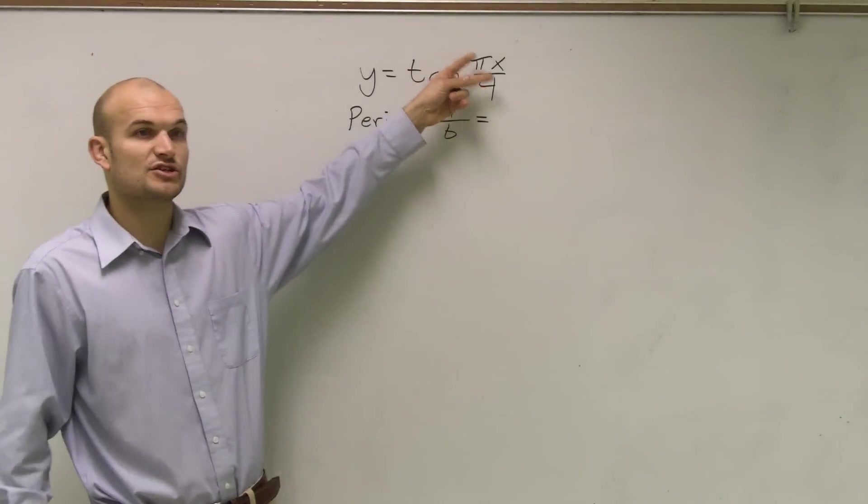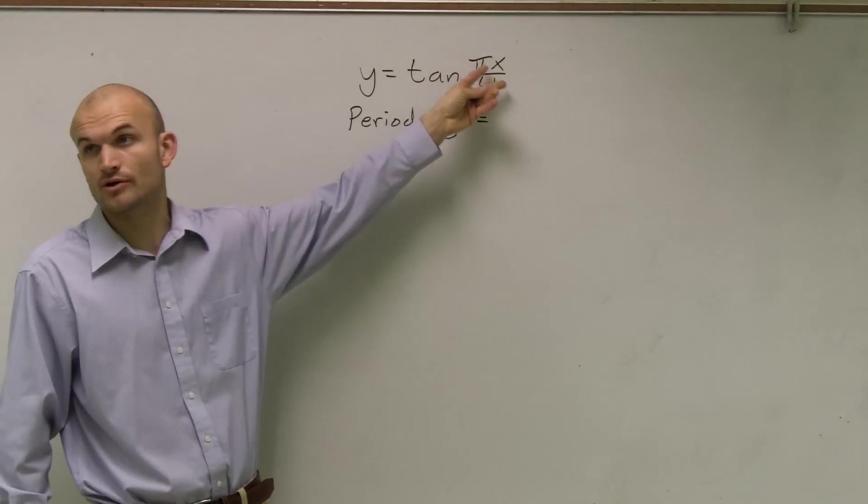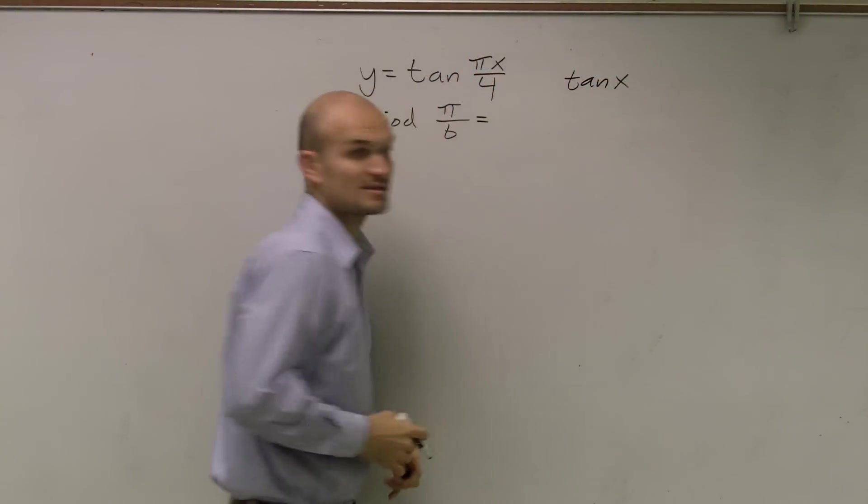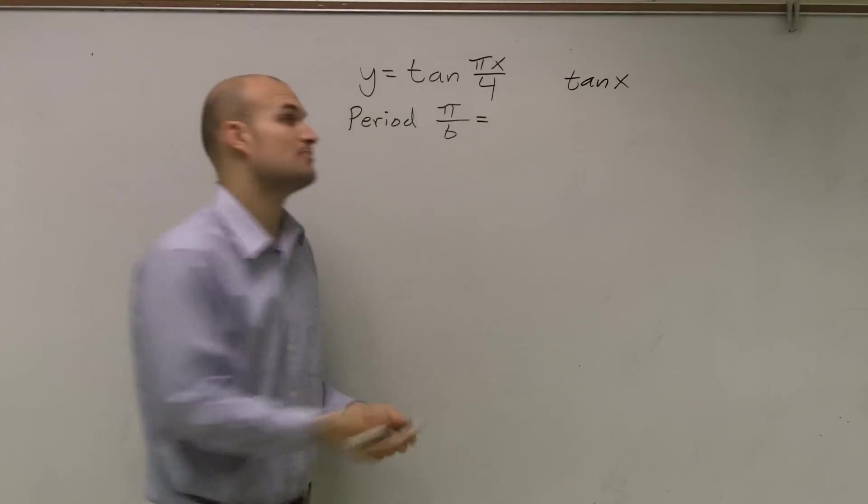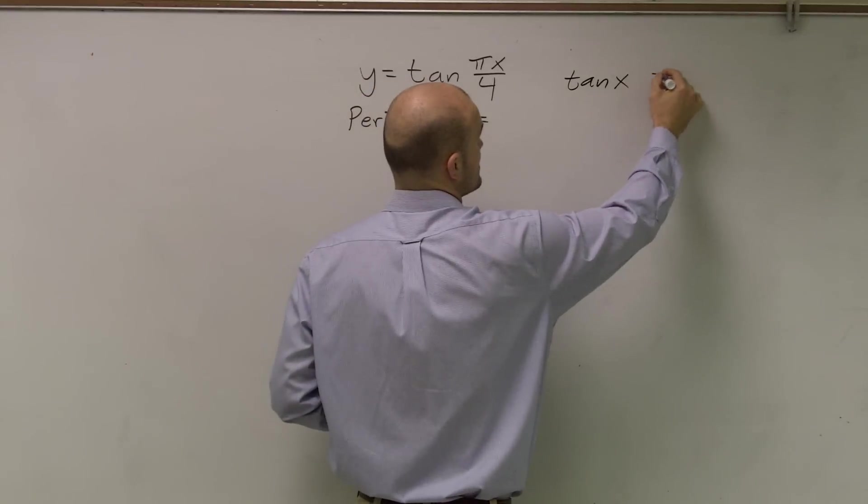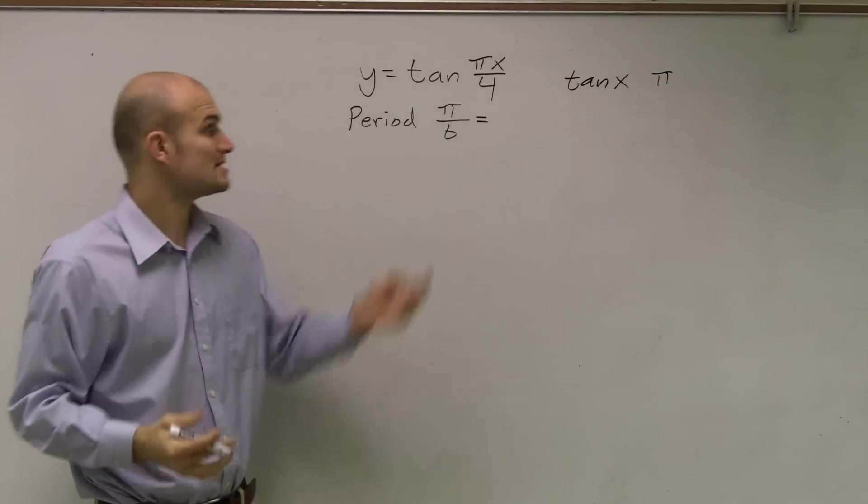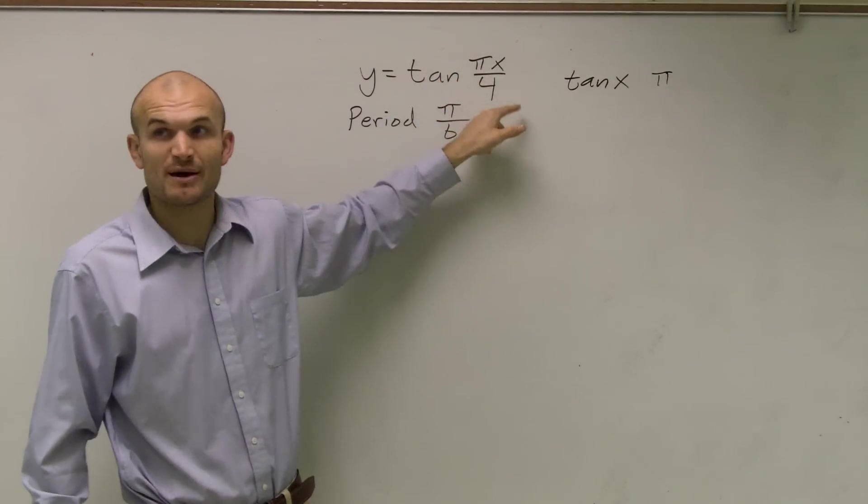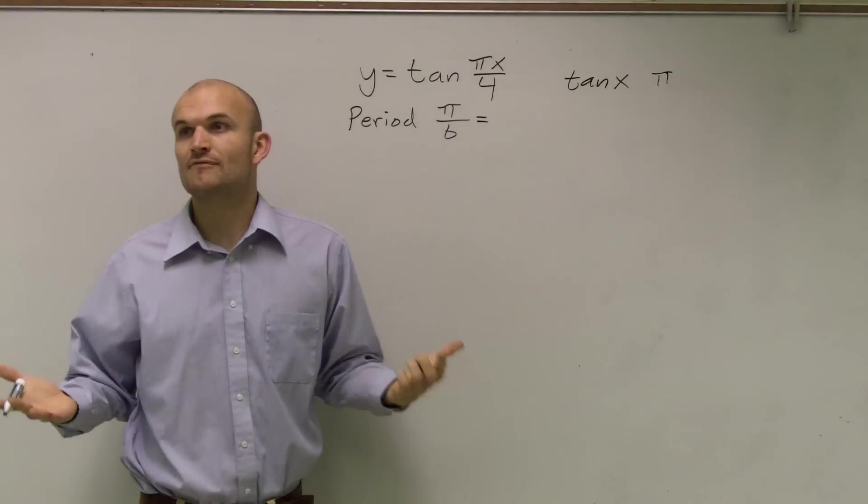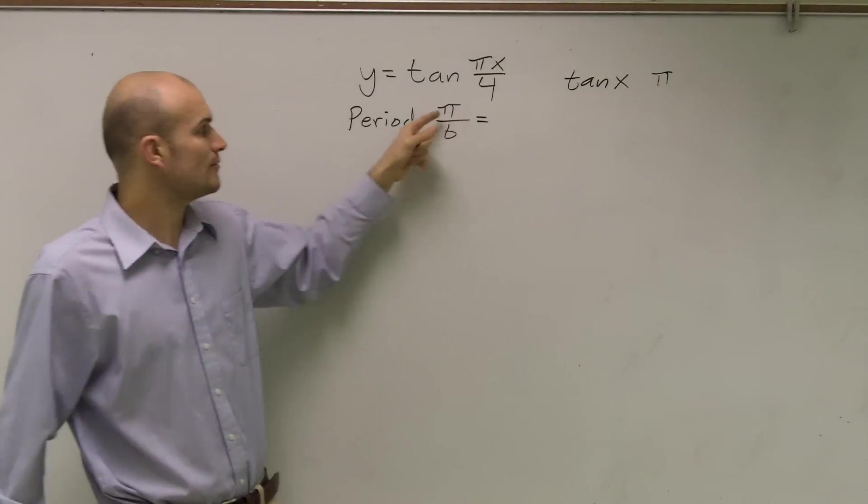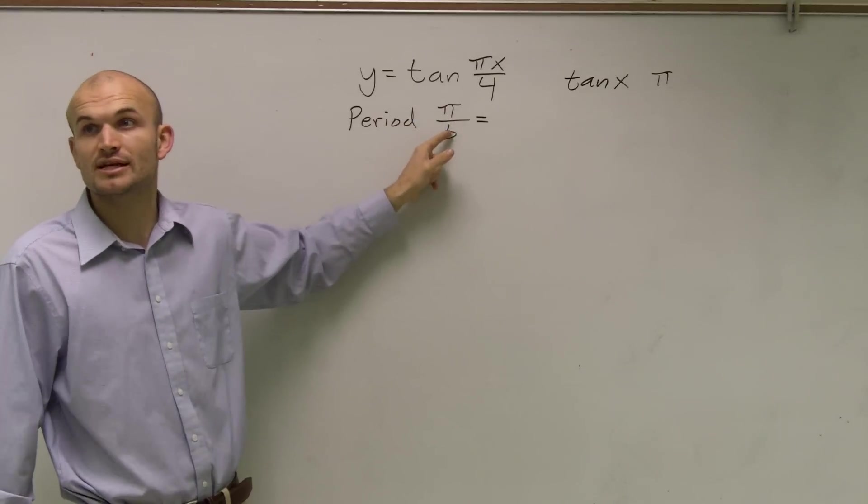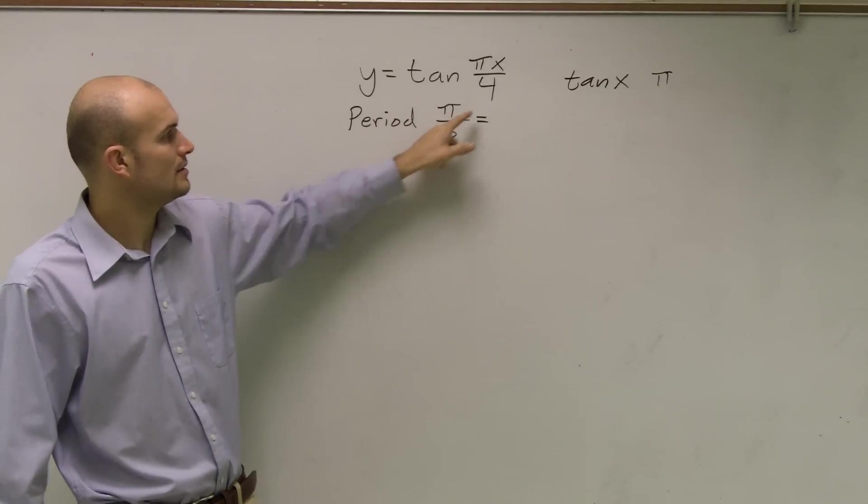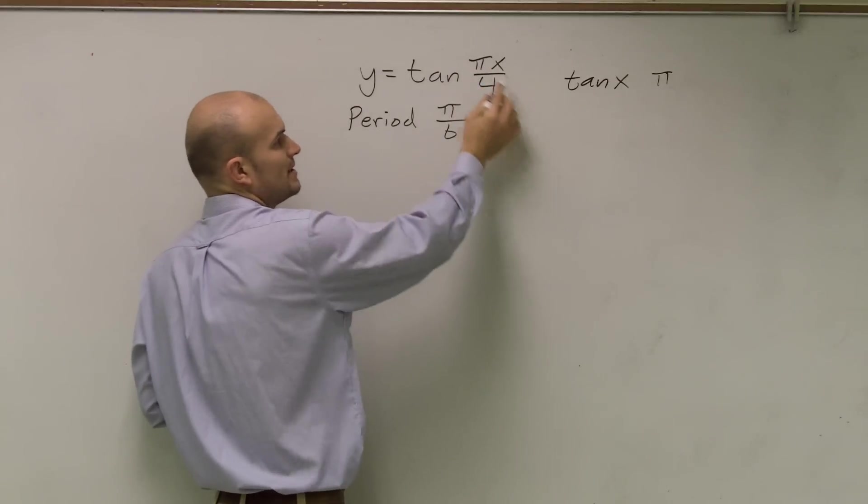What happens is we have a transformation going on. We're multiplying, if you just look at this. Tangent of x, that's your parent graph, right? The period of that is π. But what happens is if I say now I'm going to multiply x by π and then divide it by 4, I'm changing what my graph looks like, right? So now we need to include those into finding the new period. So that's why I would say π divided by b.